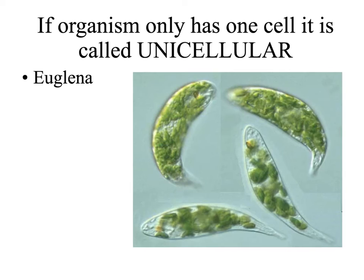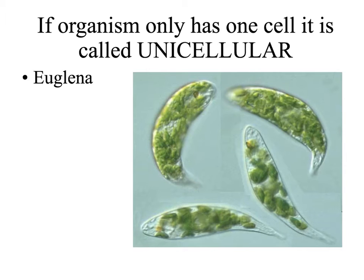Another unicellular organism is euglena. Euglena is a eukaryotic organism — as is paramecium — they have a nucleus in their structure. Euglena is very different in its nutrition: euglena can be both autotrophic and heterotrophic.